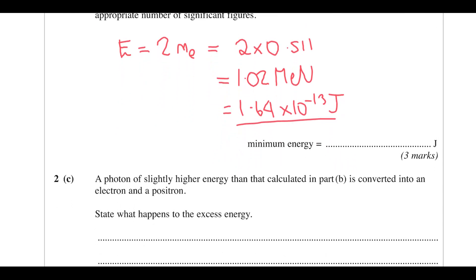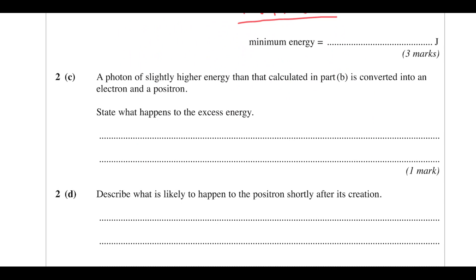A photon of slightly higher energy is still converted into an electron and a positron. The excess energy becomes kinetic energy of the particles, because the whole photon has to be used up to produce the matter and the excess is turned into kinetic energy.